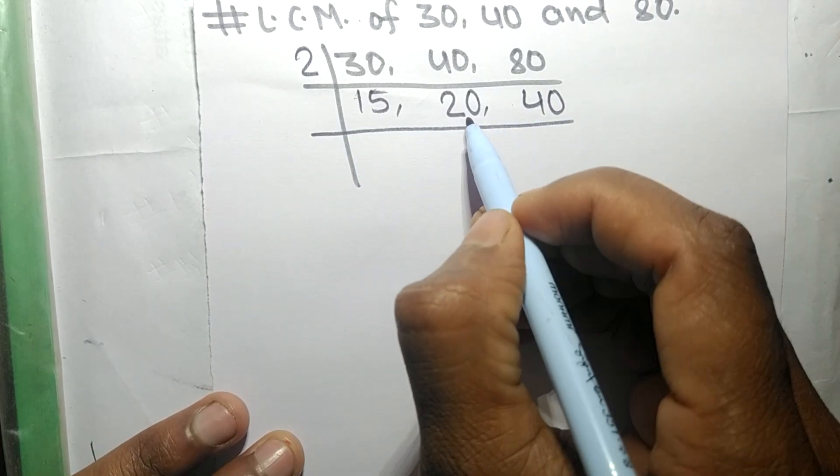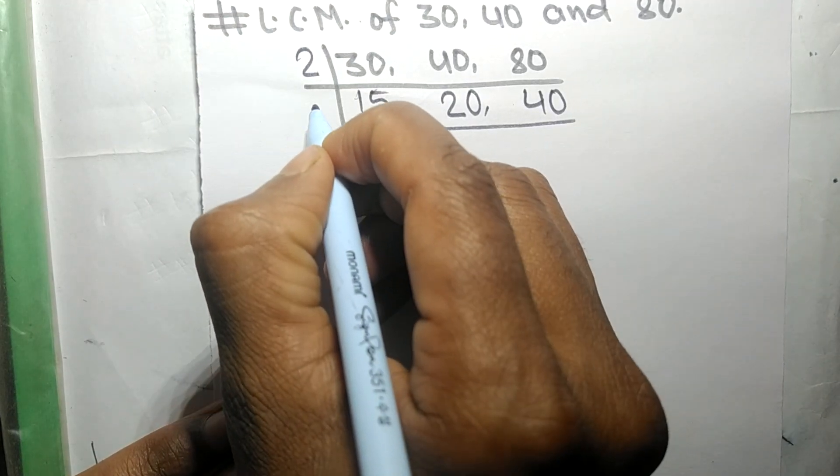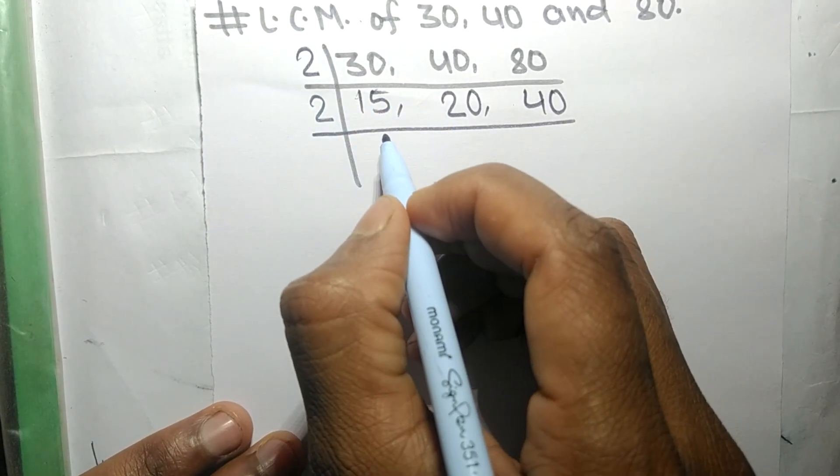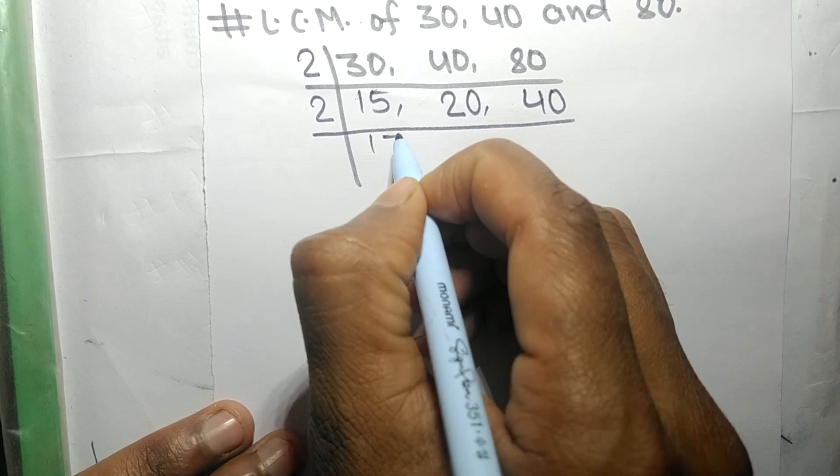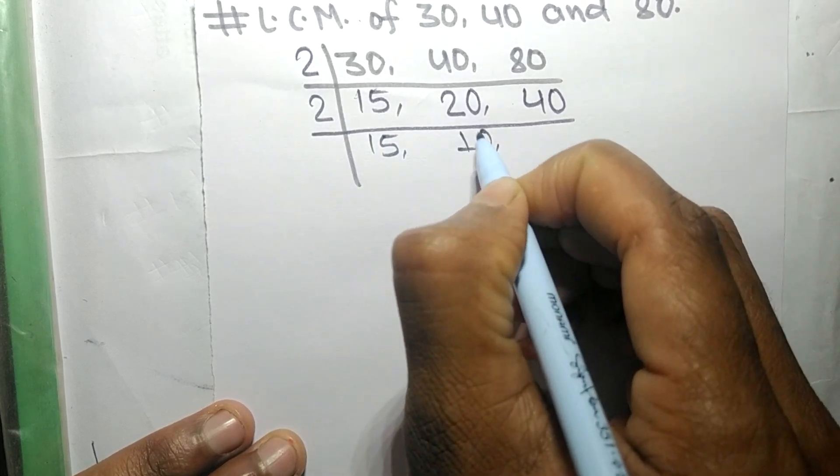Again this 20 and 40 are exactly divisible by 2. 15 is not divisible so it stays the same. 2 times 10 equals 20, 2 times 20 equals 40.